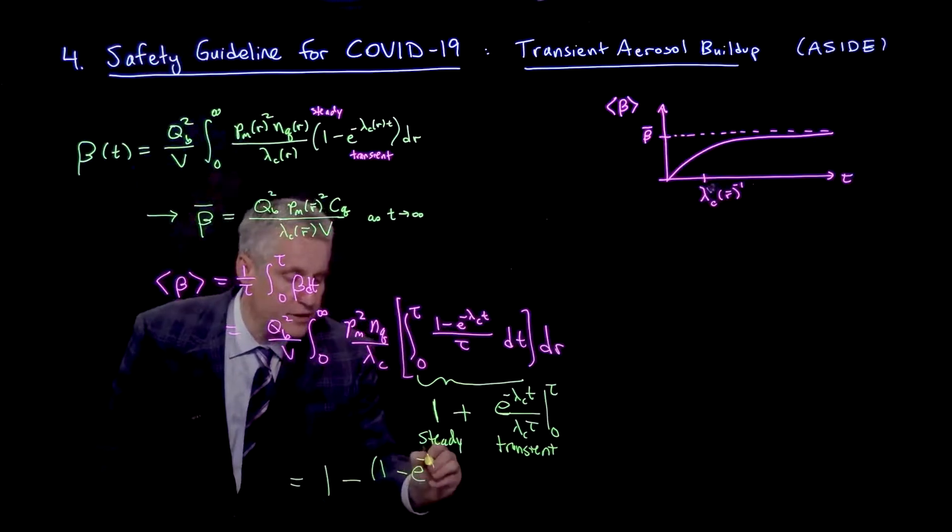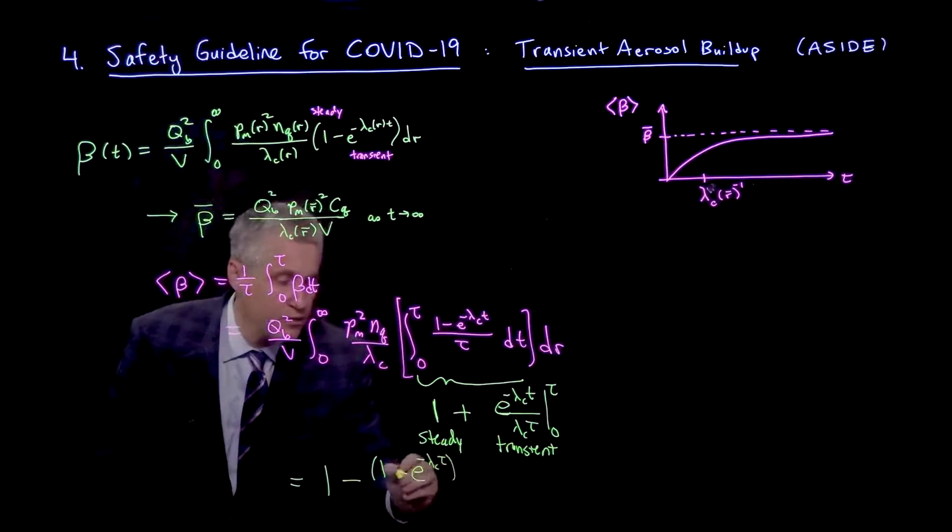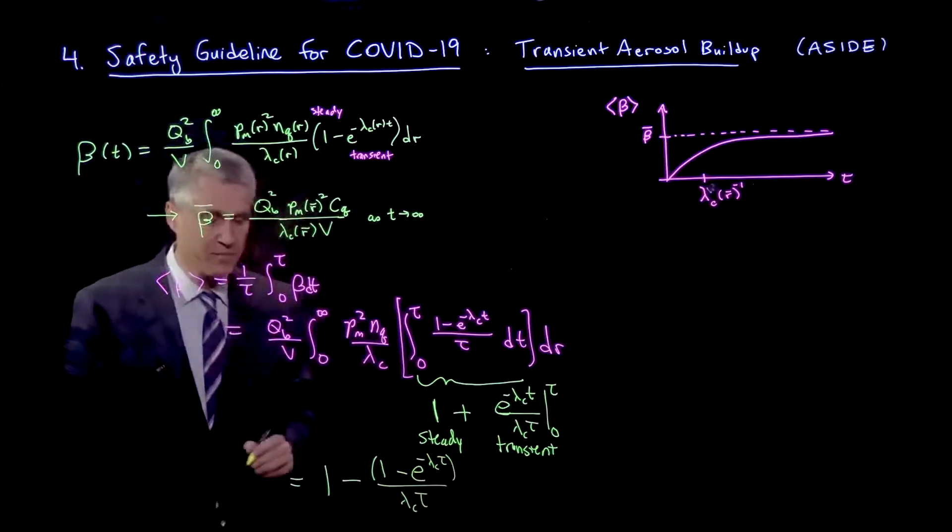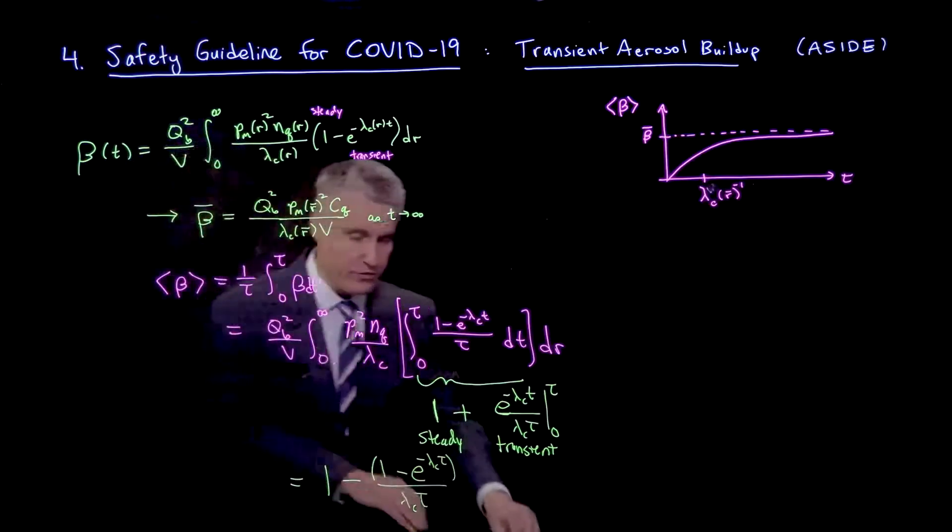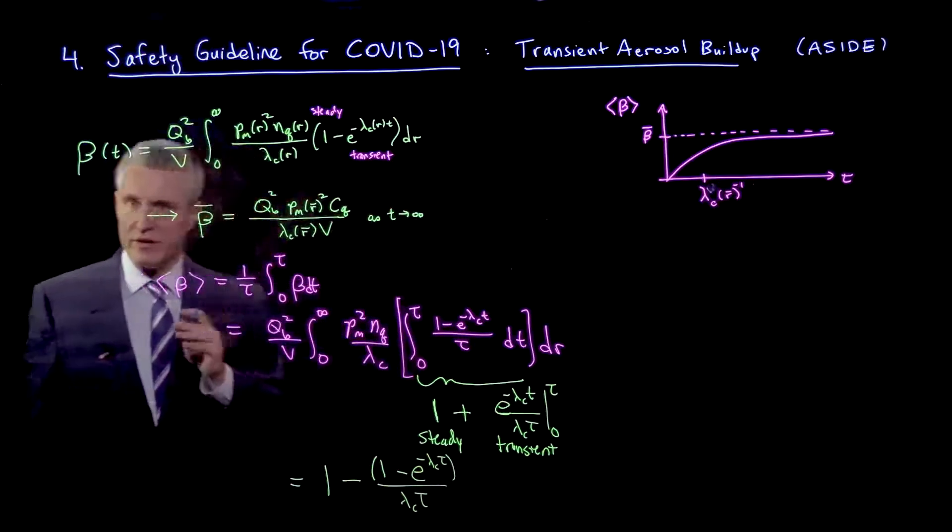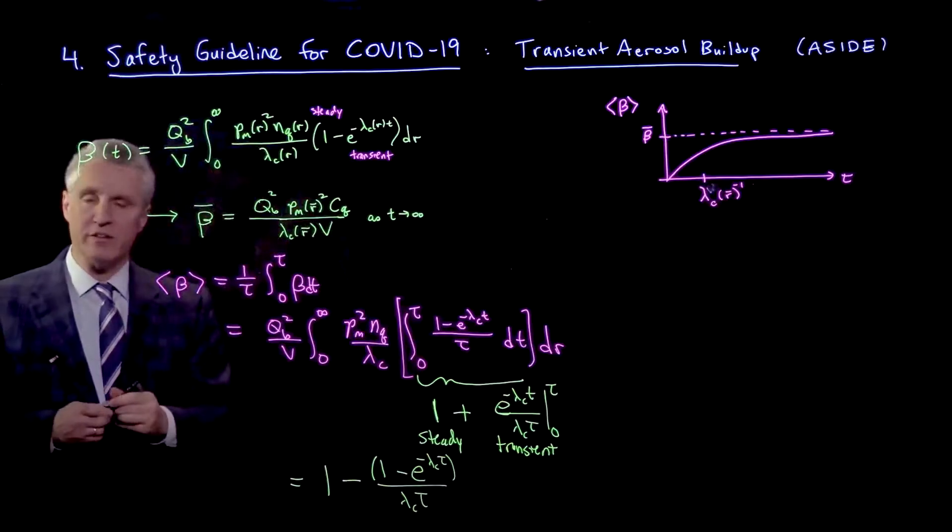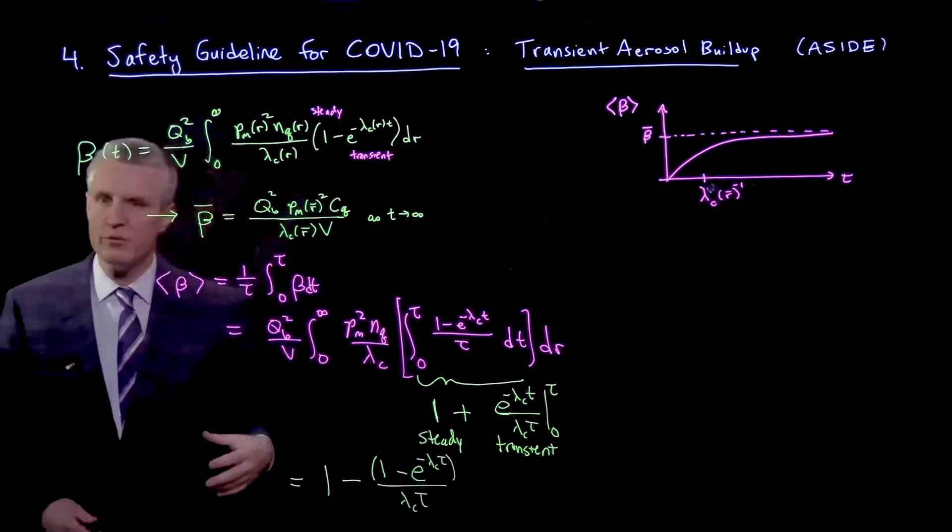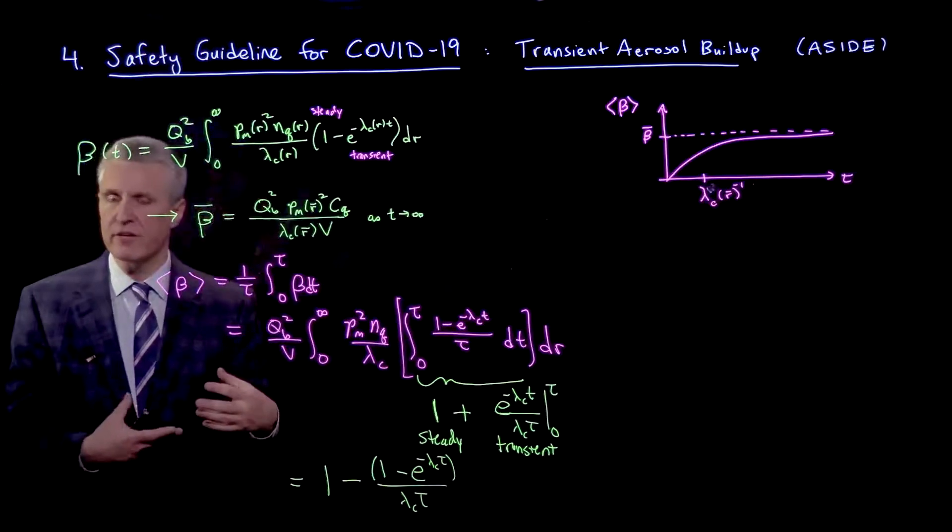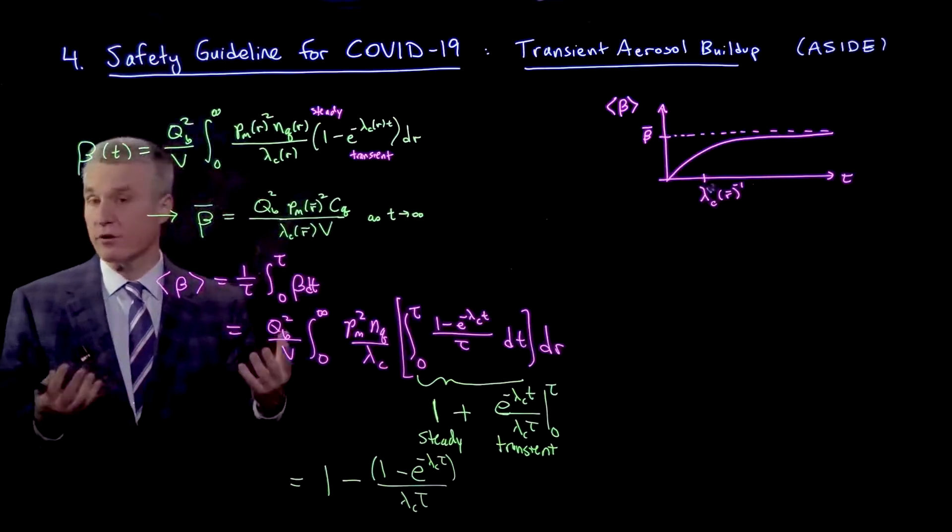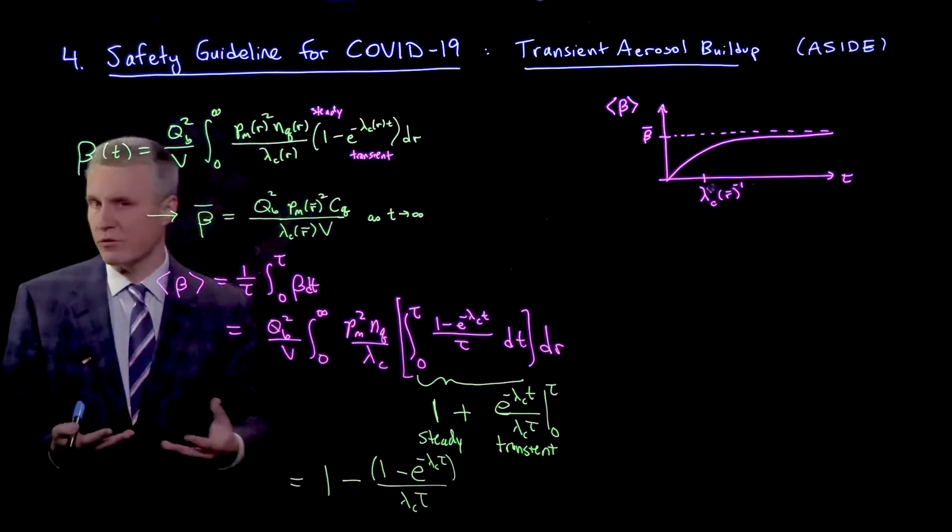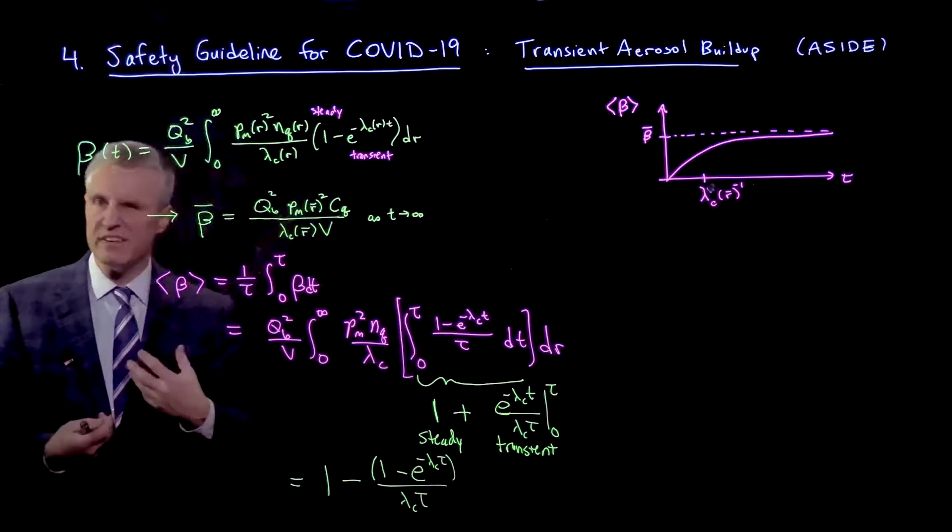e to the minus lambda c tau over lambda c tau. And now I'll use an approximation that helps me get a simple analytical result. So I should mention, as soon as we have exponentials and polynomial factors, it can be difficult to solve equations for, for example, what is the bound on the occupancy or the time in the room or the ventilation. We'd like to get a simple formula.